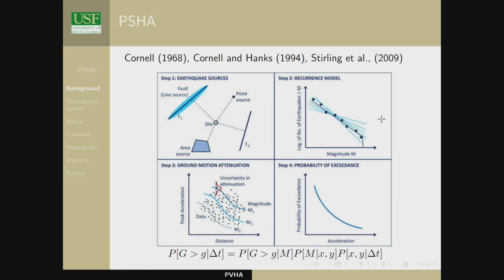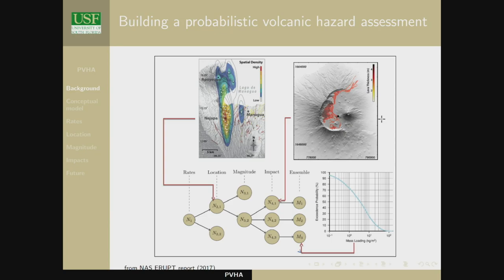That process is cast as an equation where we're multiplying conditional probabilities together to get the probability that ground acceleration will exceed some value in a specified time period delta-t. The five steps I outlined and Cornell's PSHA imply a different kind of structure than an event tree. We can also think of a logic tree where on the left-hand side we have rates, locations, magnitudes, impacts, and then an ensemble model.